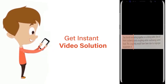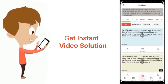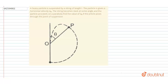A heavy particle is suspended by a string of length l and the particle is given a horizontal velocity v naught. The string becomes slack at some angle and the particle proceeds in a parabolic path. Find the value of v naught if the particle passes through the point of suspension.